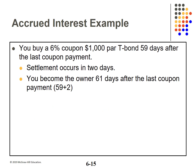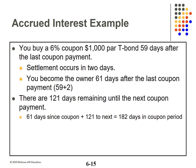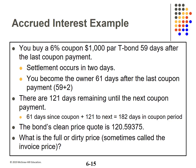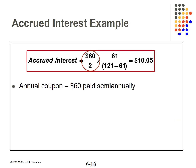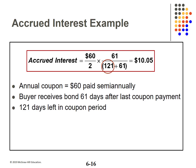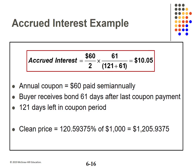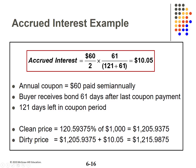Suppose you buy a 6% coupon $1,000 face value bond 59 days after the last interest payment. Since settlement occurs 2 days later, you actually own the bond with 61 days since the last coupon. There are 121 days until the next coupon, so there are 61 plus 121, or 182 days in the coupon period. The bond's quoted clean price is 120.59375. The annual coupon is $60 divided by 2. The accrued interest is $10.05. The clean price is $1,205.9375, and the dirty price adds on that $10.05, giving $1,215.9875.